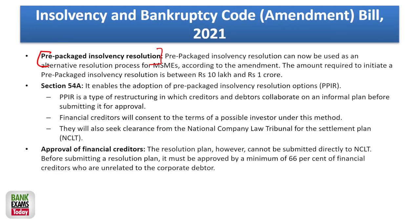In the Insolvency and Bankruptcy Code Bill 2021 amendment, pre-packaged insolvency resolution was introduced for default amounts of more than 10 lakhs but less than one crore. There are certain differences between pre-packaged insolvency resolution process (PPIRP) and CIRP. PPIRP is a type of restructuring in which creditor and debtor collaborate — a lot of homework is done before the decision-making.